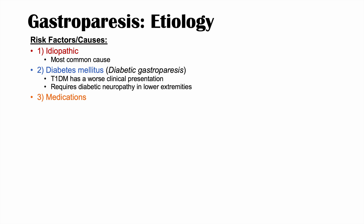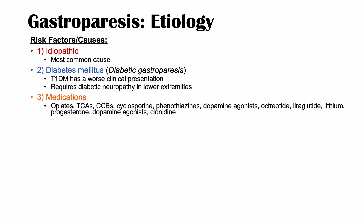The third main category of causes is medications. These include opiates such as morphine and hydromorphone, tricyclic antidepressants, calcium channel blockers, cyclosporine, phenothiazines, dopamine agonists, octreotide, liraglutide (a GLP-1 agonist), lithium, progesterone, and clonidine.